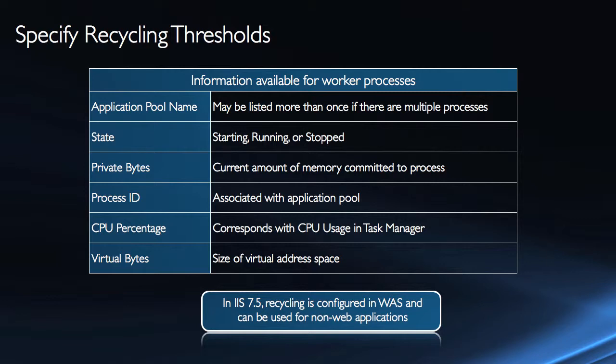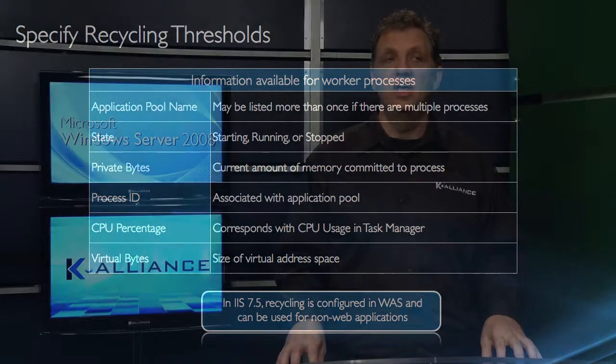We also have two other metrics: private bytes and virtual bytes. The application pool uses two different types of memory — private memory and virtual memory. The private bytes represent the amount of memory committed to the processes, while virtual bytes represent the size of the virtual address space. We're essentially controlling how large we allow the application pool to grow before we recycle it back to a manageable size — we don't want it to keep growing and consuming memory.